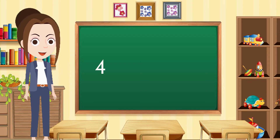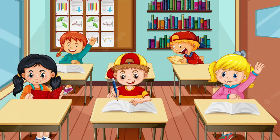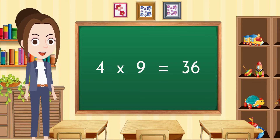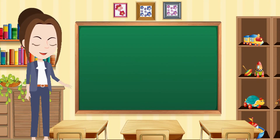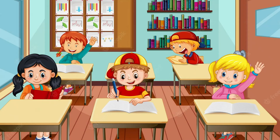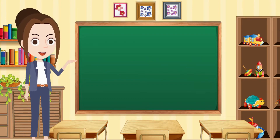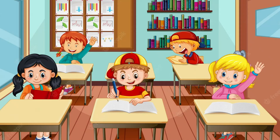Four eights are thirty-two. Four nines are thirty-six. Four tens are forty.